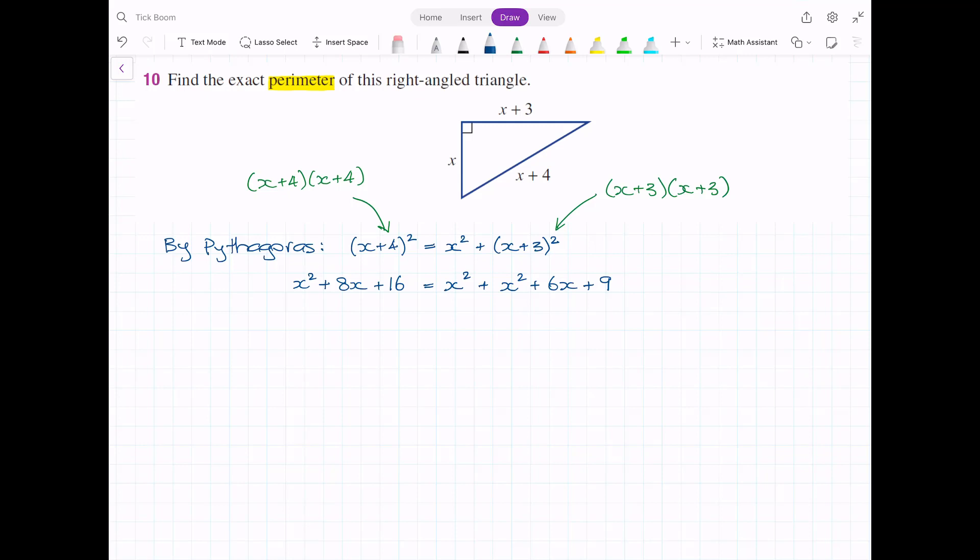What we end up with on the left-hand side is x² + 8x + 16, and on the right-hand side we have two of these x², so 2x² + 6x + 9. I'll bring everything over to the right-hand side. 2x² minus 1x² would be just x² over here on the right. 6x minus 8x would be minus 2x, and then 9 minus 16 would be minus 7. So we'll have 0 = x² - 2x - 7.